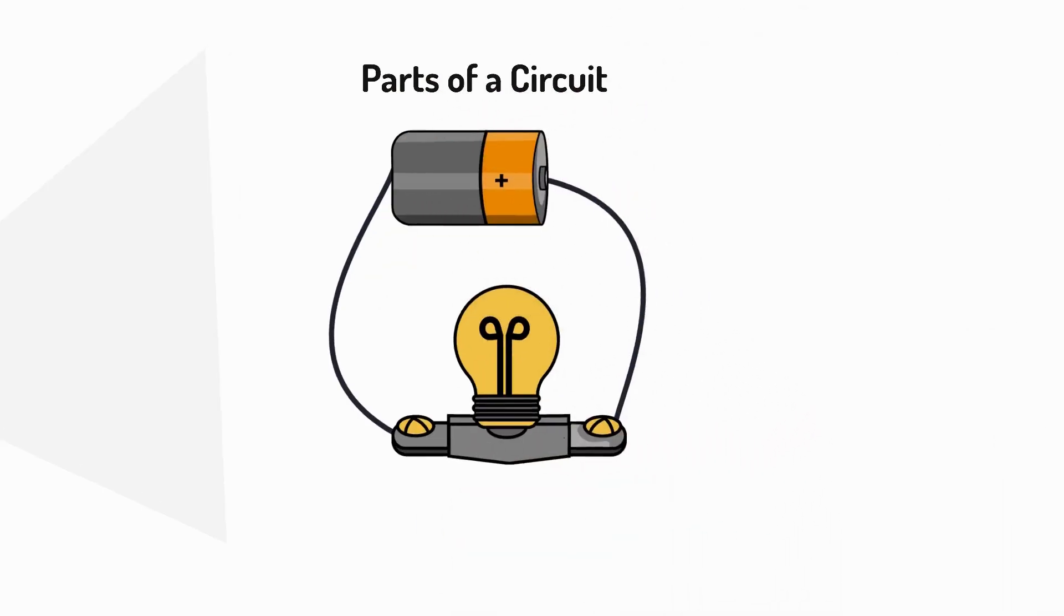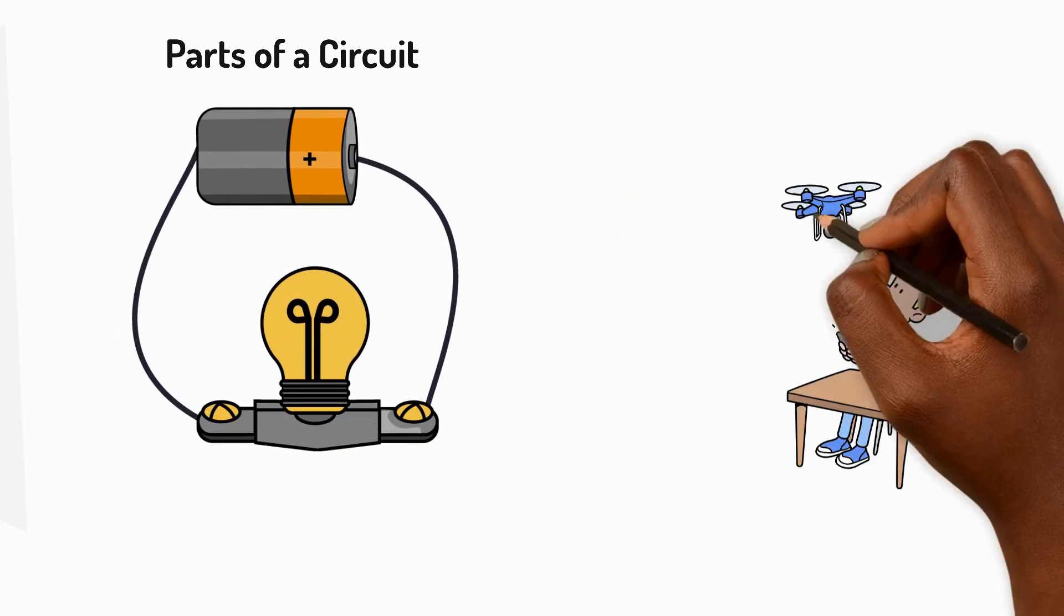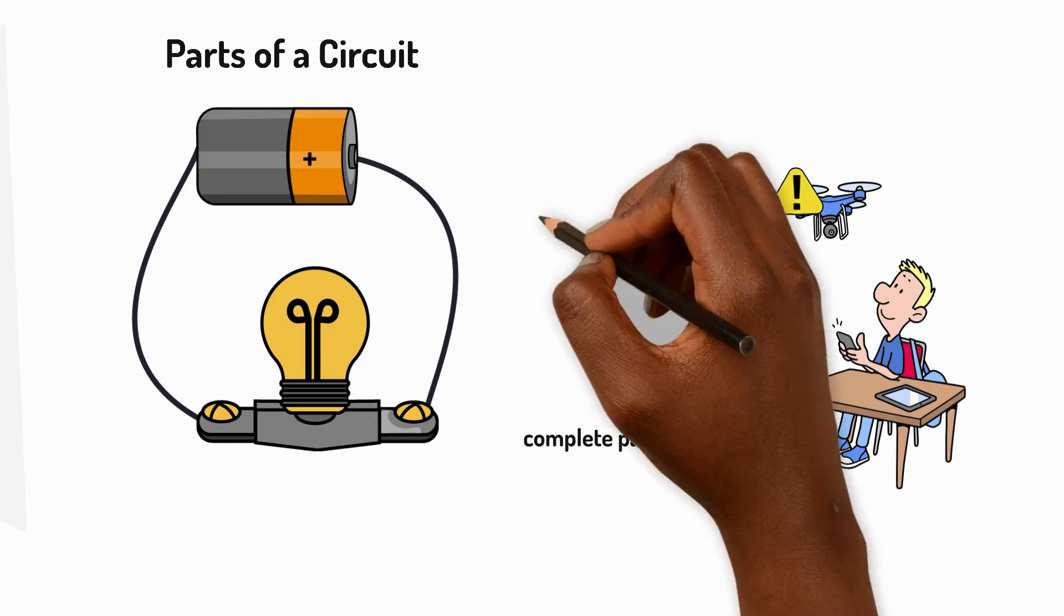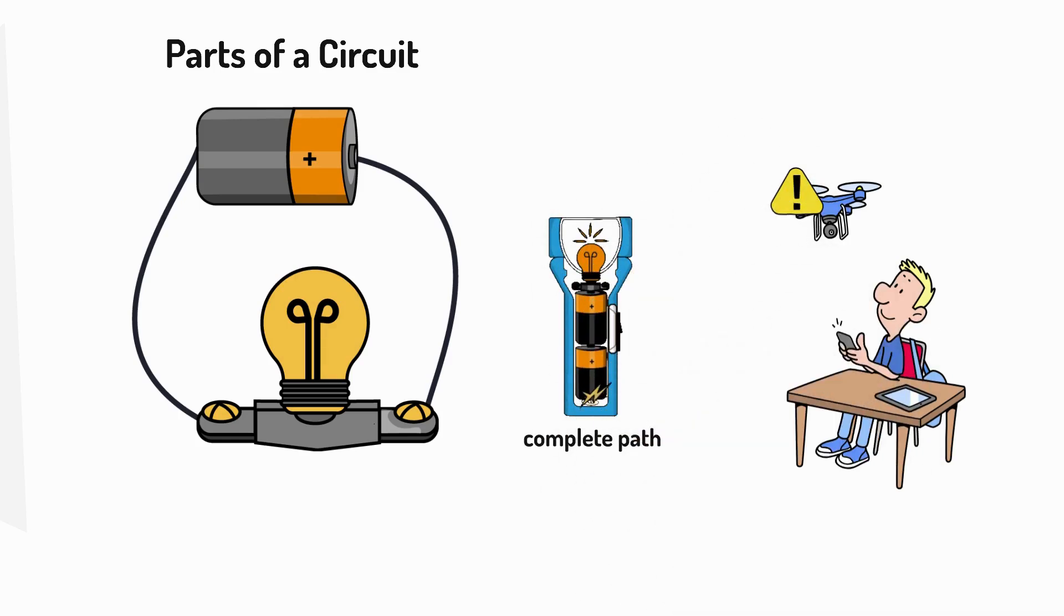In this video we're going to look at the parts of a circuit. Have you ever had a toy or torch that wouldn't work? To understand why we need to learn about circuits. In this video we'll discover how electricity needs a complete path to flow.